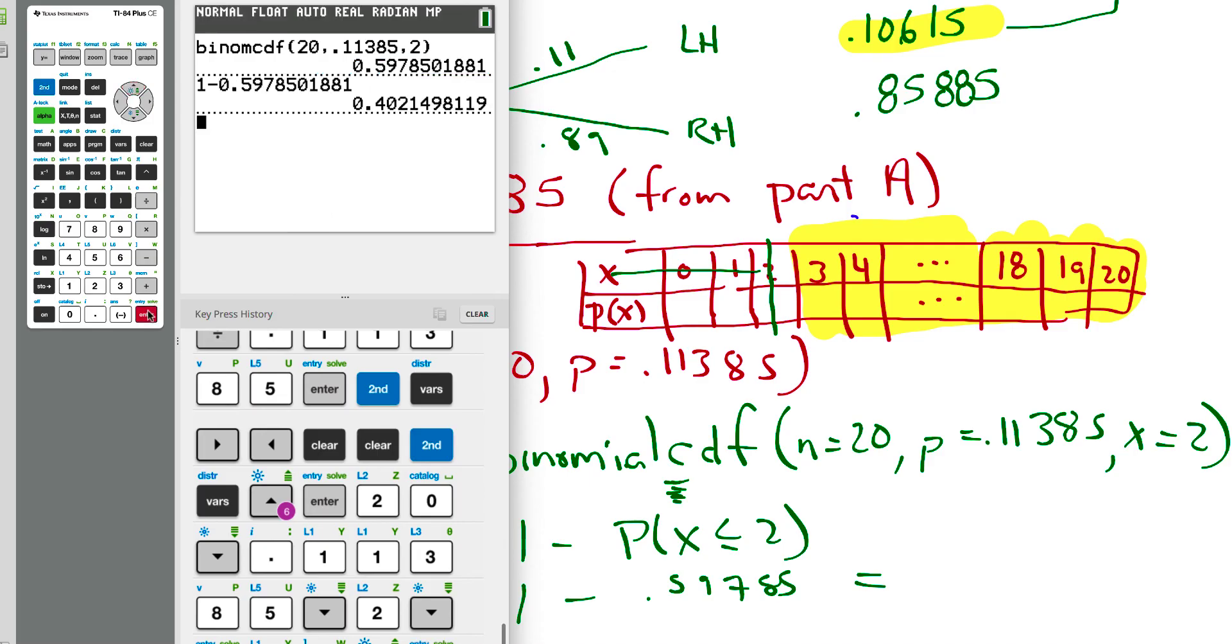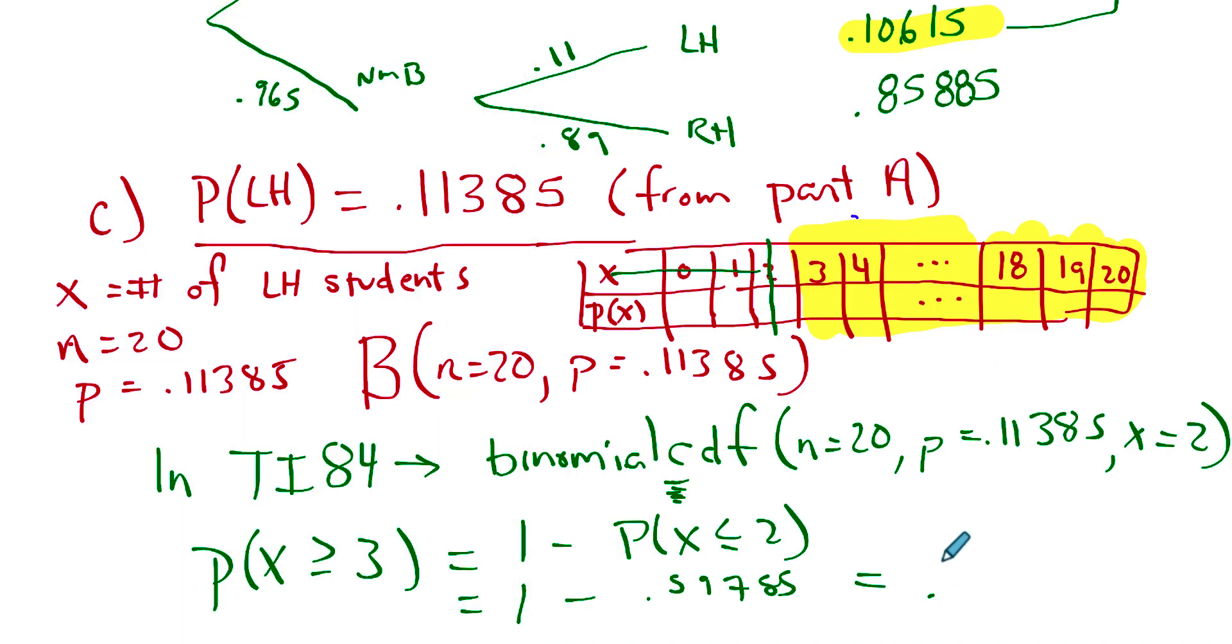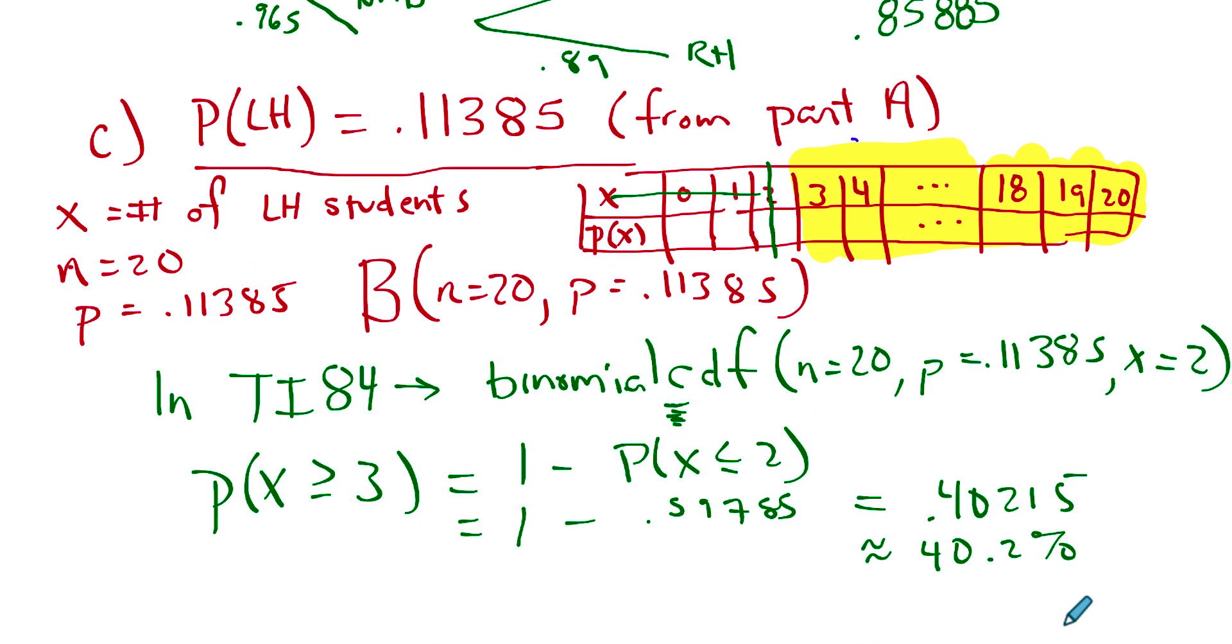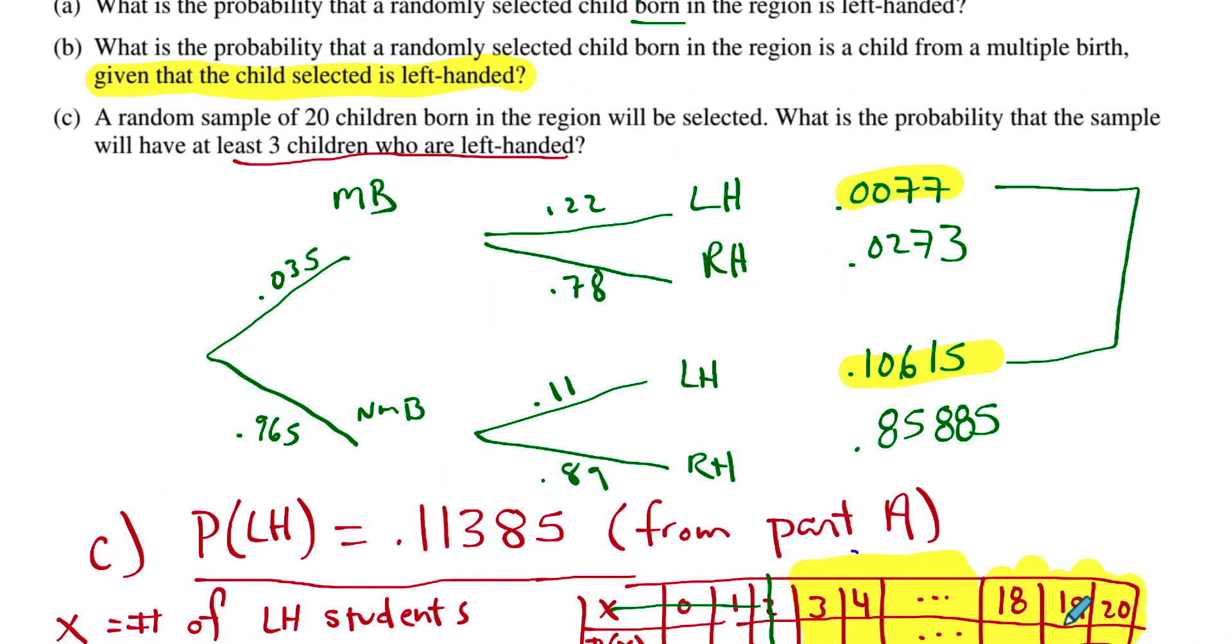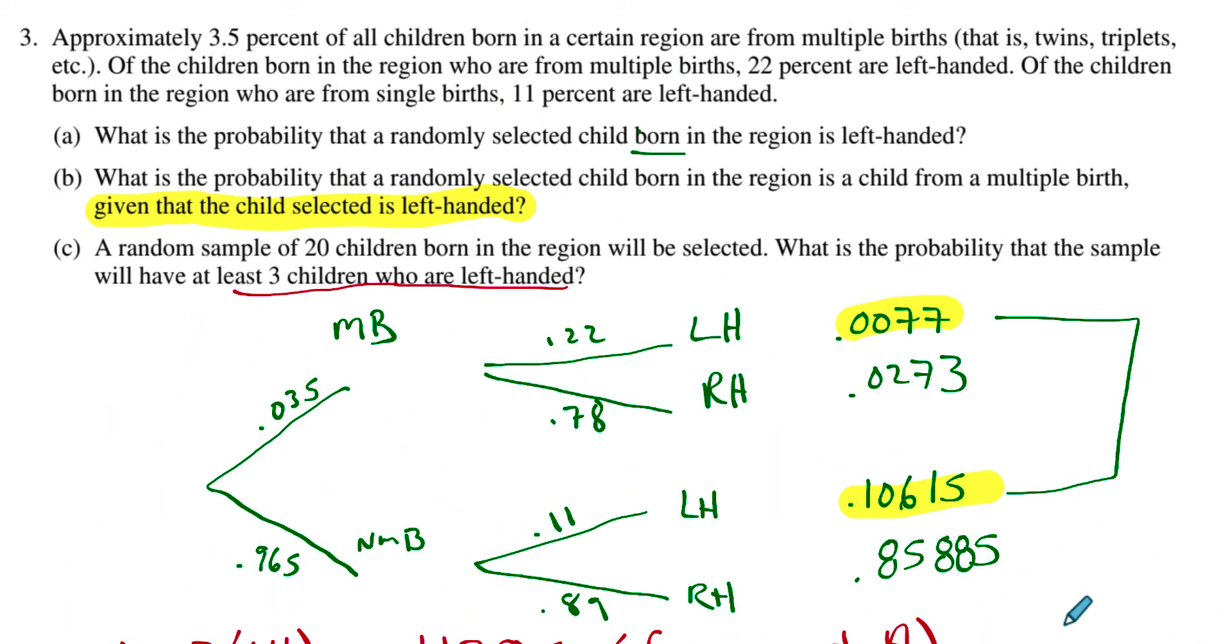And I get 40%, 42, 15, if I round it correctly. So 42, 1, 5. So that is approximately 40.2%. I can go to the nearest tenth there. All right, did we answer the question, a random sample? What is the probability? So 40.2%. That is the probability. I think that answers those questions. That is question number three from 2018.